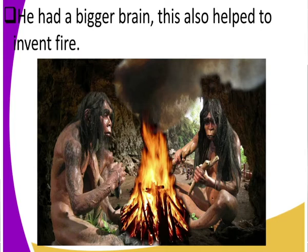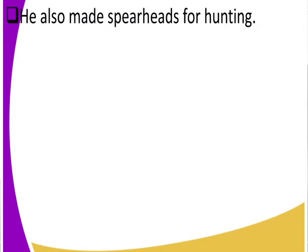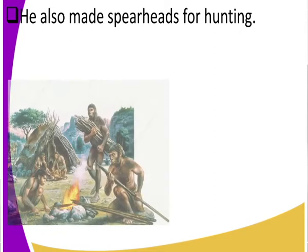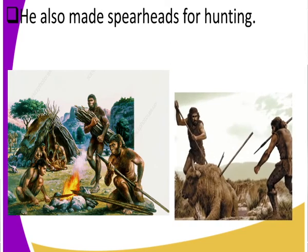He also made spears. When he made spears, they were used for hunting. Now that he was clever, his hunting techniques and hunting skills greatly improved. You can see the fire he invented is also now being used to make spears, and these are the spears that Homo erectus used in hunting. Those spears made it possible for him to hunt.